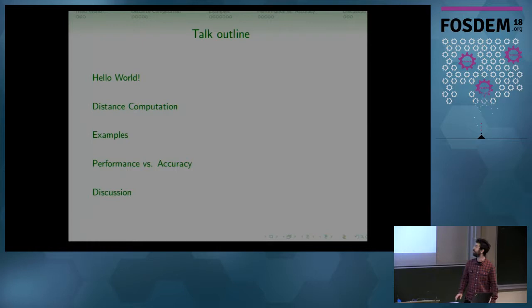So let me talk about the outline. First, I'd like to do some introduction on what is Boost Geometry and what is distance, give you some examples, and then discuss trade-offs between performance and accuracy when we compute distances. I would like to sum up with some discussion.